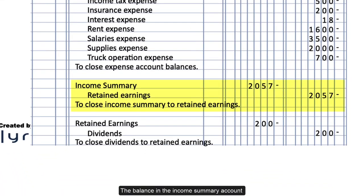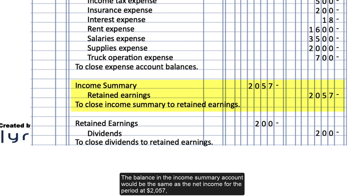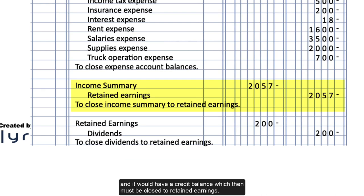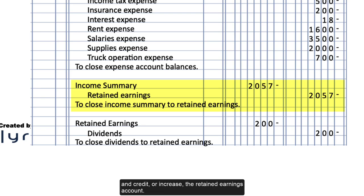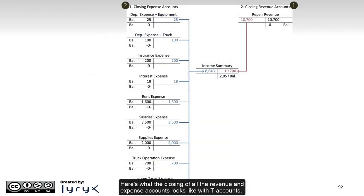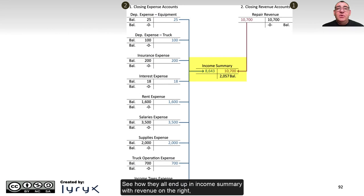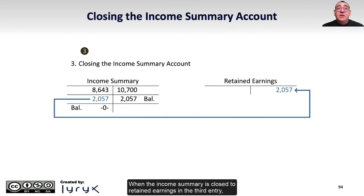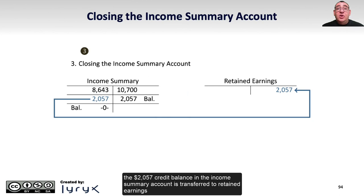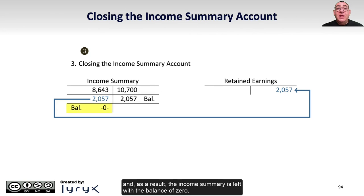The balance in the income summary account would be the same as the net income for the period at $2,057, and it would have a credit balance, which then must be closed to retained earnings. So we will debit or decrease the income summary account and credit or increase the retained earnings account. Here's what the closing of all the revenue and expense accounts looks like with T-accounts. Revenue ends up on the right or credit side, and expenses on the left or debit side. When the income summary is closed to retained earnings in the third entry, the $2,057 credit balance is transferred to retained earnings, and the income summary is left with a balance of zero.